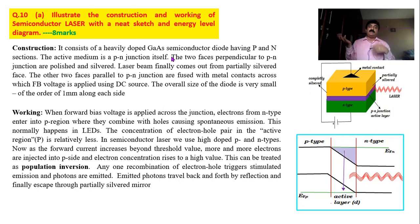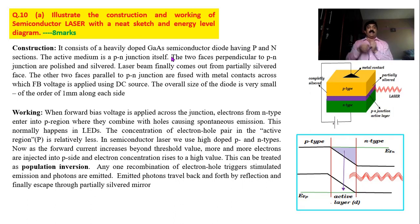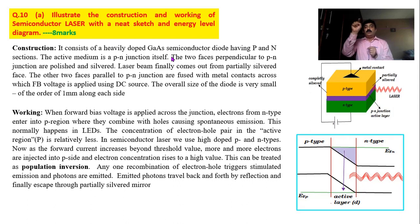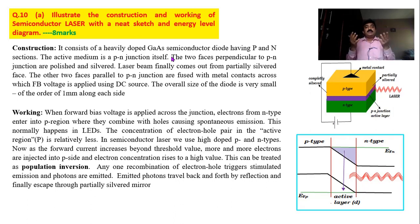The number of electrons in the conduction band keeps on increasing and the number of holes in the valence band keeps on increasing. At one stage the population becomes maximum, and one electron comes down to the ground state — that is, the valence band — and recombines with the hole, emitting a photon. That emitted photon will influence all the other electrons to come down; that means stimulation takes place. As a result, all the electrons present in the conduction band come down at the same time.